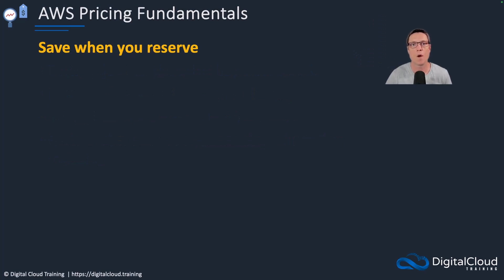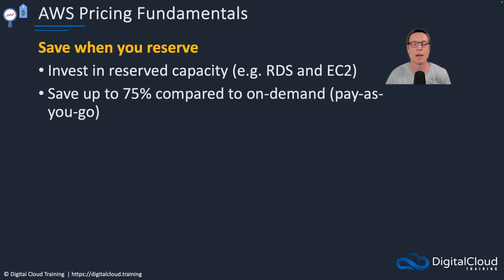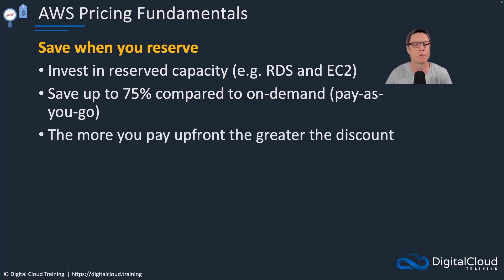Another pricing model is save when you reserve, meaning you're reserving capacity — for example with RDS, with EC2, and a variety of other services. What you're doing here is committing for a period of time: one or three years. AWS will give you a discount — in fact, you can save up to 75% compared to on-demand pricing. The more you pay up front, the greater the discount. You can pay all of the amount up front, or pay a partial amount up front with subsequent payments over time, though in that case the discount is not as great. So you're better off paying all up front if you can.